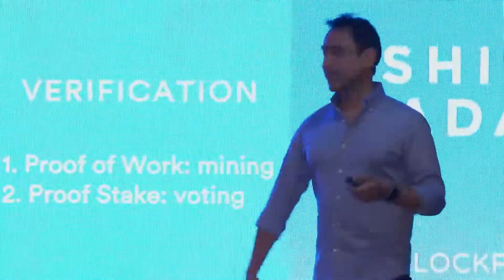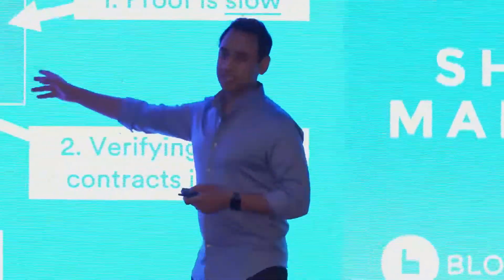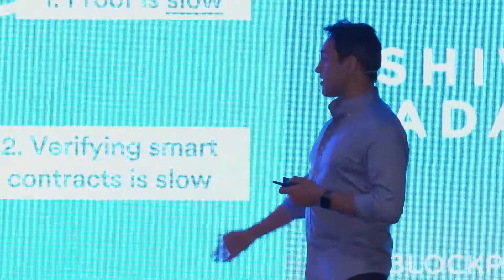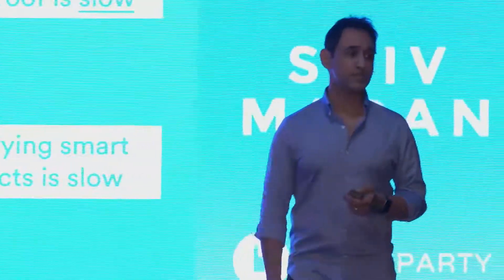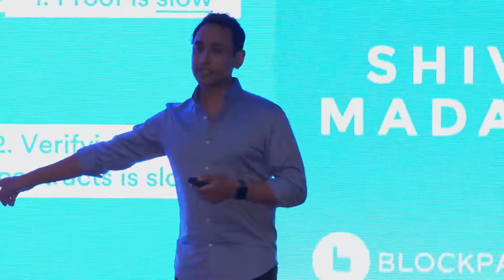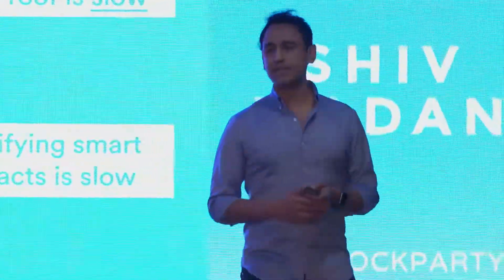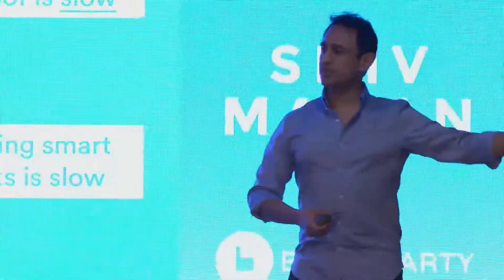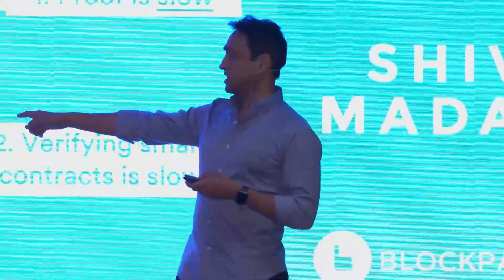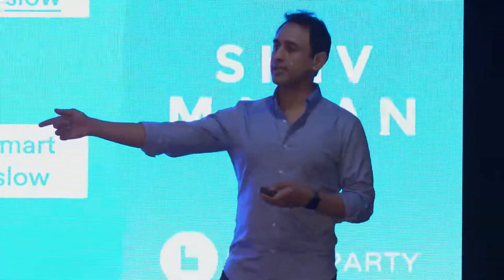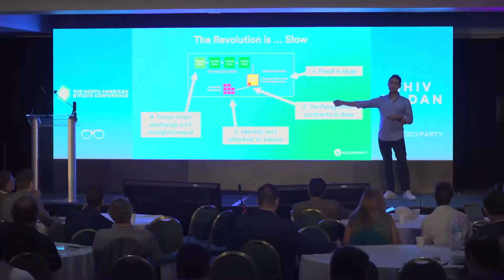What's the problem with that? The proof is extremely slow — 15 transactions per second. The verification in this case is a non-fungible token, so it's slow like CryptoKitties. The identity isn't attached to the token, so Drake doesn't trust that Kanye's ticket is real and wants to confirm it's a bona fide ticket from the Staples Center. And cross-chain exchange isn't very straightforward — Drake finds a buyer on the EOS blockchain and wants to sell to that buyer. How do you enable that transaction?